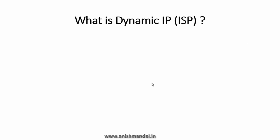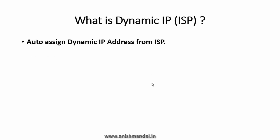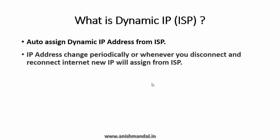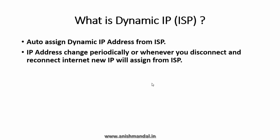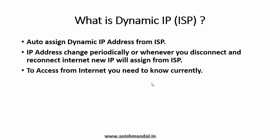The second type is a dynamic IP address, which is auto-assigned by your ISP. The IP changes whenever you disconnect or reconnect to the internet — a new public IP will be assigned by your ISP. To access your system from the internet, you need to know the currently assigned IP from your ISP, or there is an alternate solution available.